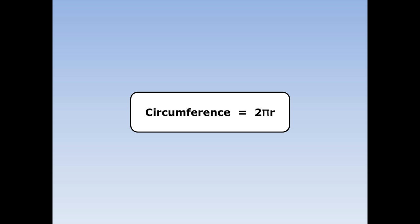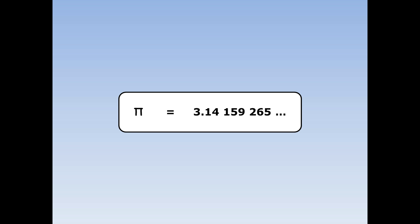This means 2 times pi times the radius. Pi is a number that goes on forever — it's equal to 3.14159265. But we're going to round it off and use pi as 3.14.